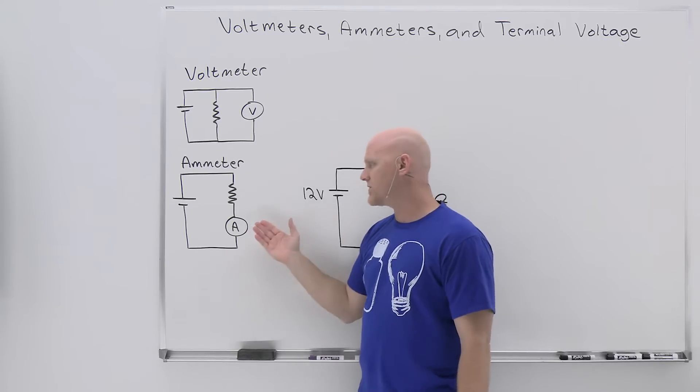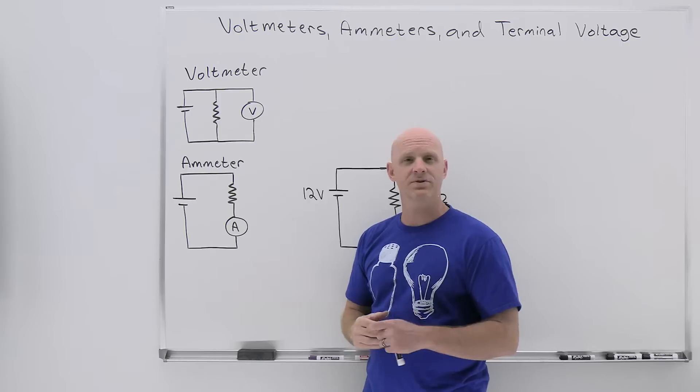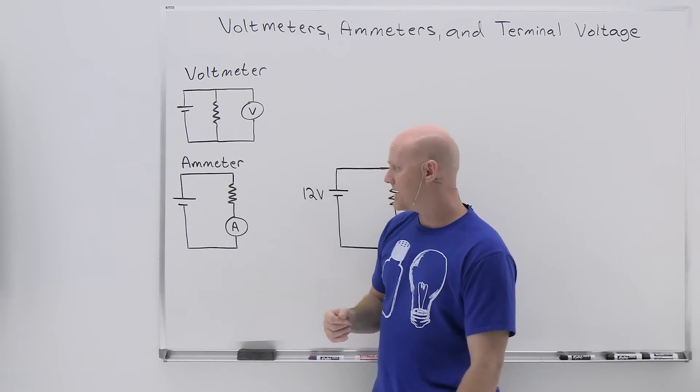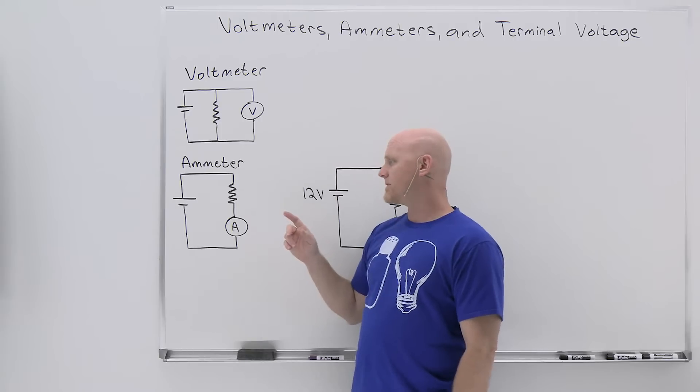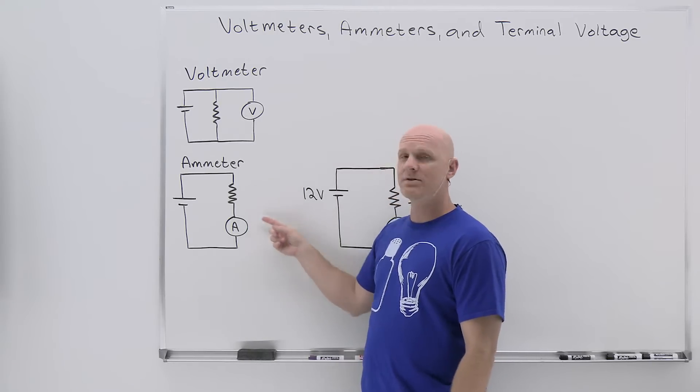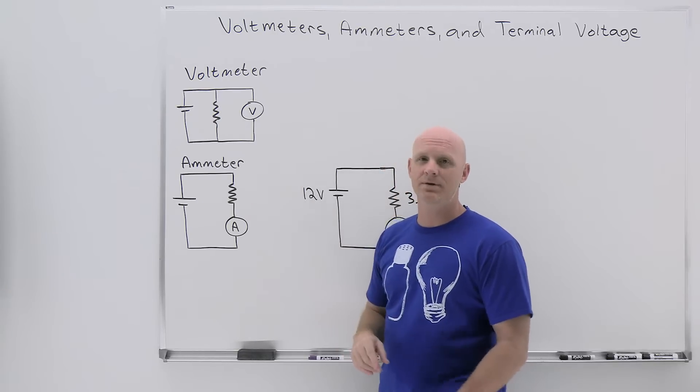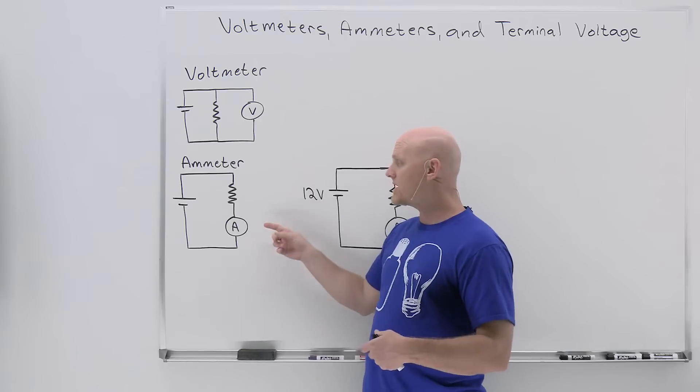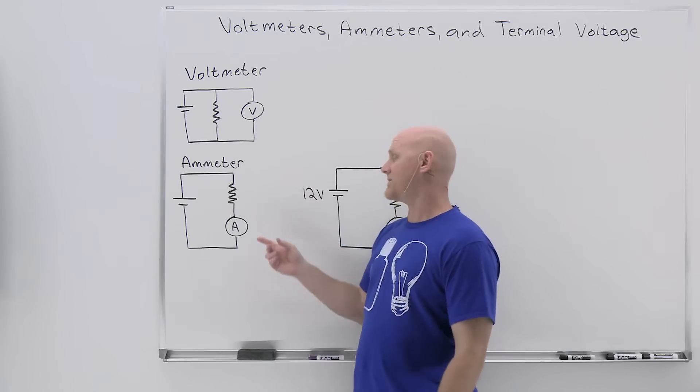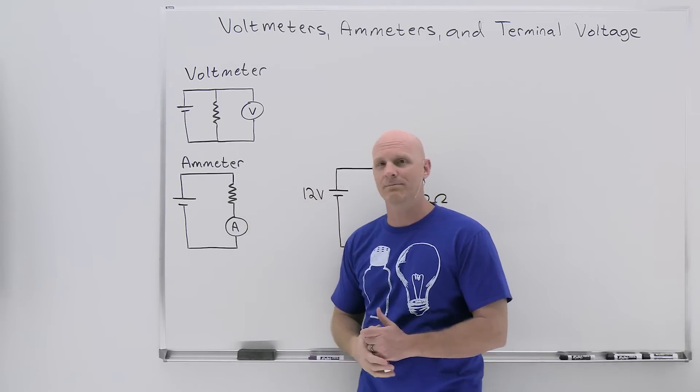Now similarly, we can hook up an ammeter to a circuit to measure current this time. So instead of measuring the potential difference, we're now measuring the current in amps. And to do that, instead of hooking up your ammeter with a resistor in parallel, you actually want to hook it up in series. Just like with the voltmeter, there's an internal resistor in our ammeter, and in this case by hooking it up in series, we learn that two resistors in series have the same current. So the current I measure in the ammeter is the same current that's flowing through this resistor.